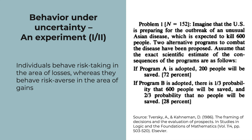One group of students from Stanford University and the University of British Columbia were asked the following question. Imagine the United States is preparing for the outbreak of an unusual Asian disease, which is expected to kill 600 people. Two alternative programs to combat the disease have been proposed. Program A: 200 people will be saved. Program B: there is a one-third probability that 600 people will be saved and a two-thirds probability that no people will be saved. Which one would you choose?